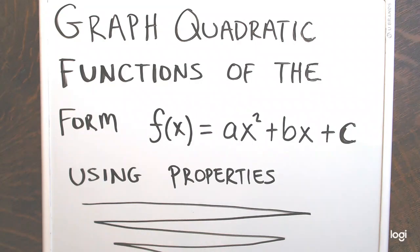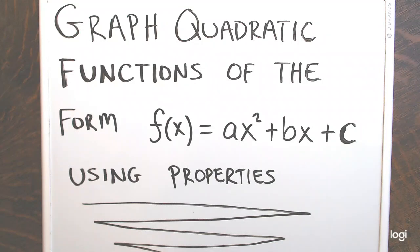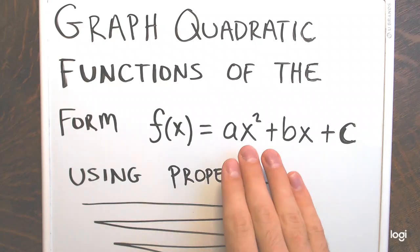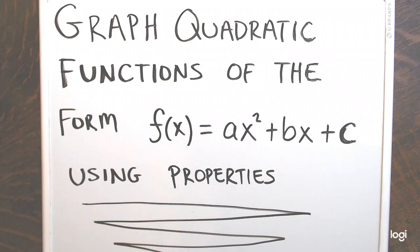In this video I'm going to start off with an overview of what happened in a previous video, where we took a function like this and wrote it in vertex form. Then I'll show you that you don't really need to do that every time. There's actually a shortcut way of graphing y equals ax squared plus bx plus c just by knowing a few properties of parabolas.